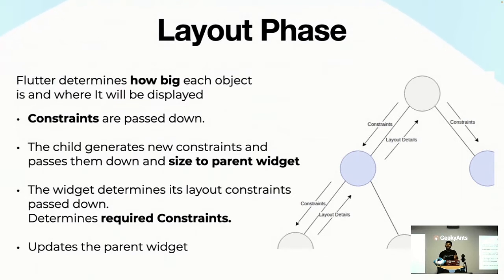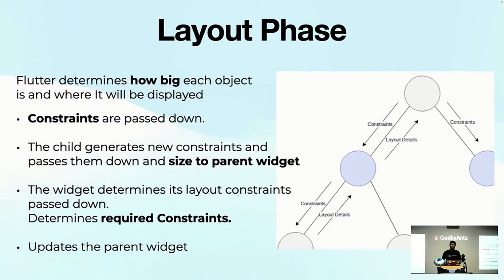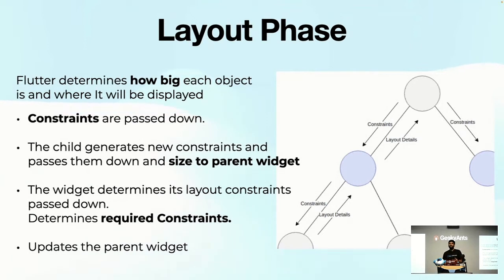Each widget is assigned its position and constraints beforehand. A constraint is the maximum space available. The parent passes down constraints to the child — for example, the stage is eight feet wide and three feet tall, so the speaker can only move within that space. The parent widget gives the child widget its constraints, and the child reports back its actual size. In a single sentence: constraints come down from parent to child, and sizes go up from child to parent.